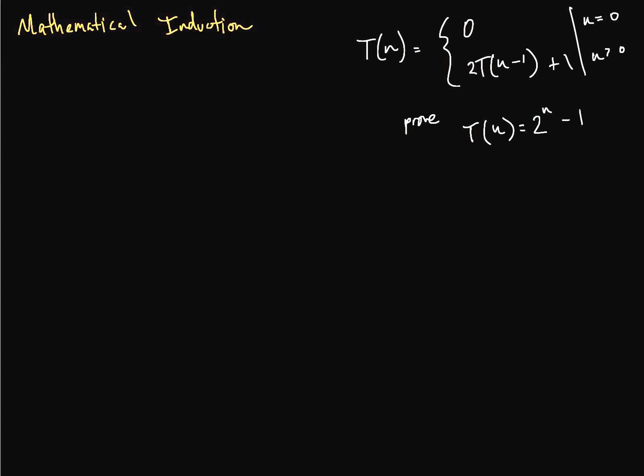So how do we do that? Well, in mathematical induction, the first thing we do is prove the base case. So here's our base step. It's trivial in this case because T(0) is equal to 0. So that's easy to prove.